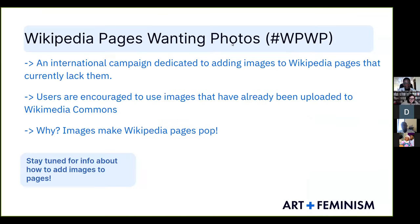To briefly introduce the Wikipedia Pages Wanting Photos campaign — I've put a link in the chat which is their project page. It's basically an international campaign dedicated to adding images to Wikipedia pages that currently lack them. Users are encouraged to use images that have already been uploaded to Wikimedia Commons. Images make Wikipedia pages pop — they make them look way cooler, more engaging, and just make it look like a better page overall.